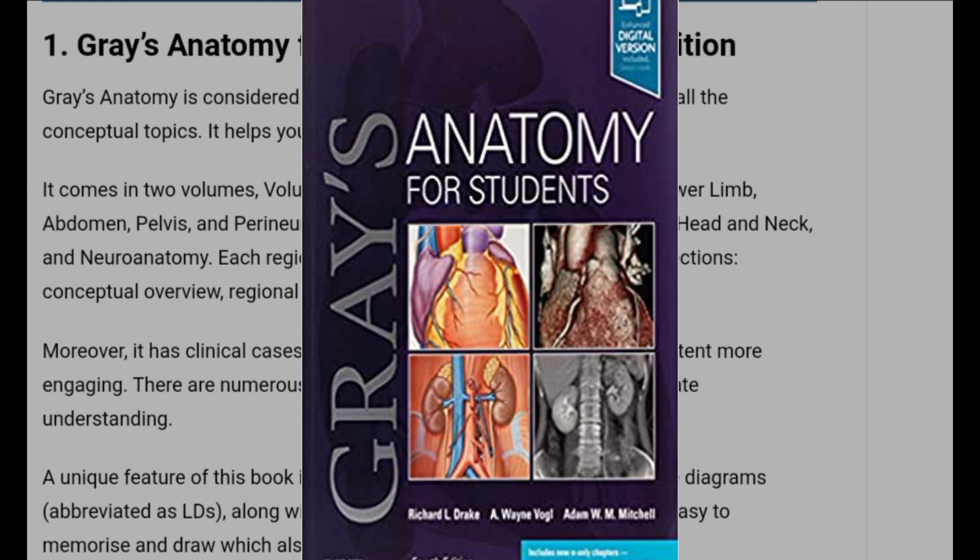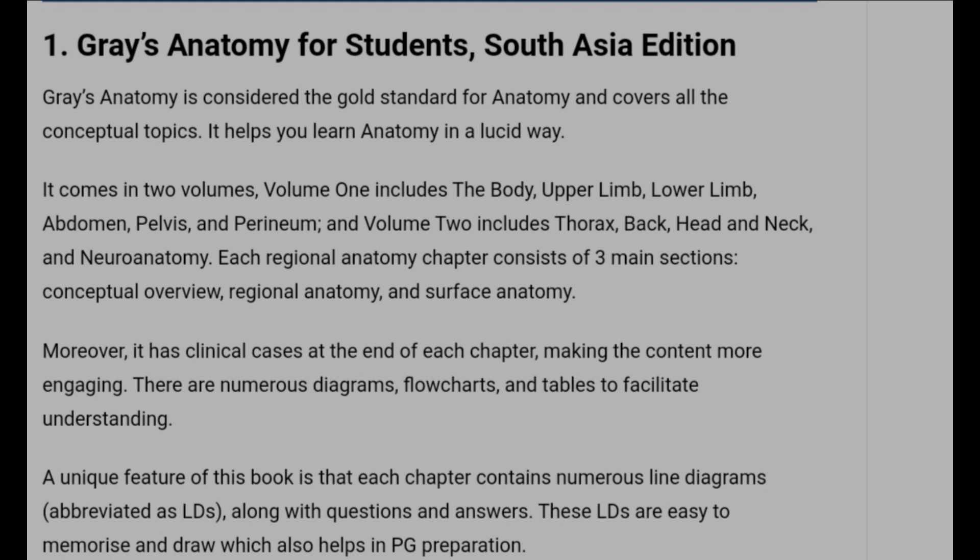Gray's Anatomy for Students, South Asian Edition. It's a conceptual one — an easy way of understanding. It comes in two volumes. Volume one includes: the body, upper limb, lower limb, abdomen, pelvis, and perineum. Volume two includes: thorax, back, head, neck, and neuroanatomy.